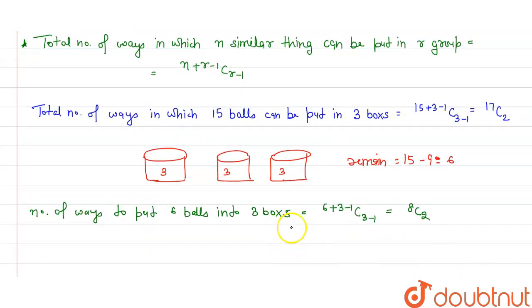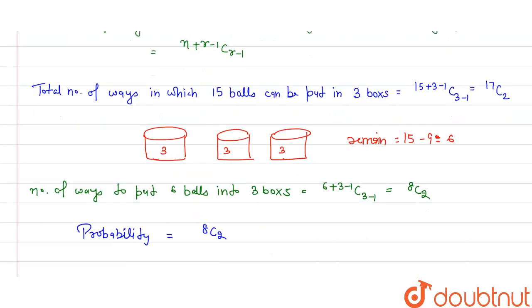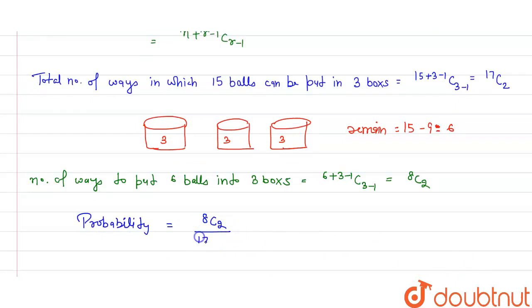So this is the favorable cases and this is the total cases. So now the probability will be favorable outcome upon total outcome. This is equal to, after solving, 8 into 7 upon 17 into 16. This will cancel out with 2.